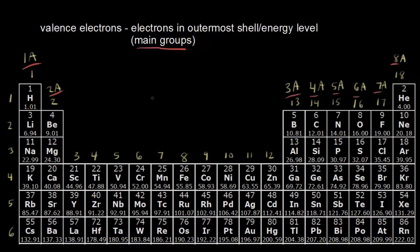We're going to ignore the other way to number the groups, and therefore we're going to ignore groups three through twelve for this video. If we're talking about the main groups, the valence electrons are the electrons in the outermost shell, or the outermost energy level.